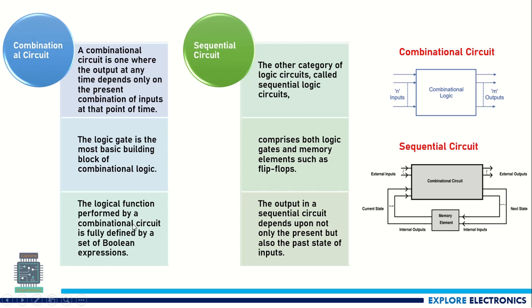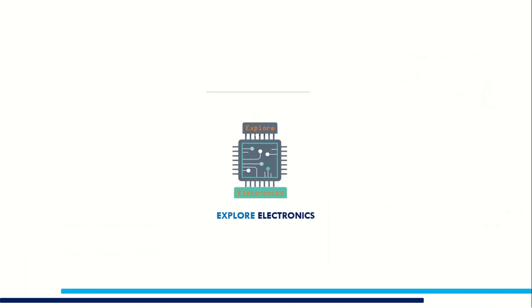So, a combinational logic circuit consists of only logic gates, while a sequential circuit consists of memory elements along with those logic gates. The output of a combinational logic depends on the present inputs, while the output of a sequential circuit depends on both the previous outputs and the present inputs. This is the introduction to combinational and sequential circuits. In the next video, we will look at the design of combinational and sequential circuits. Thank you.